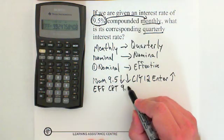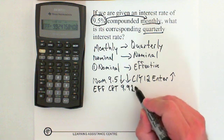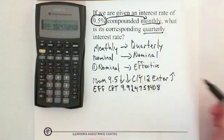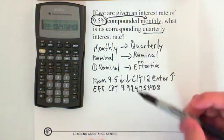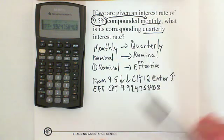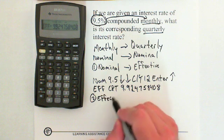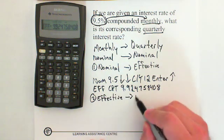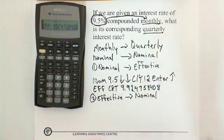So now here is our existing nominal rate for 9.5 monthly converted to effective. That's step one — nominal to effective — done. We've converted the nominal rate to effective. Step two is to take this effective rate that we've just computed and change it to the new nominal — the quarterly rate that we want.